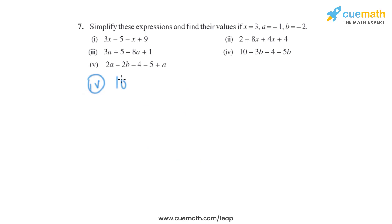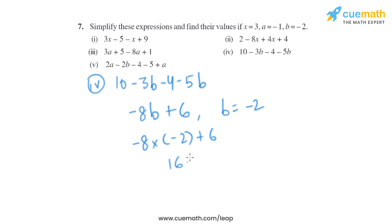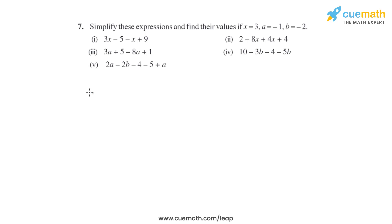The fourth expression is 10 minus 3b minus 4 minus 5b. The like terms minus 3b and minus 5b give us minus 8b, and 10 minus 4 gives us plus 6. Putting b equals minus 2, it becomes minus 8 into minus 2 plus 6, which is plus 16 plus 6, which equals 22.